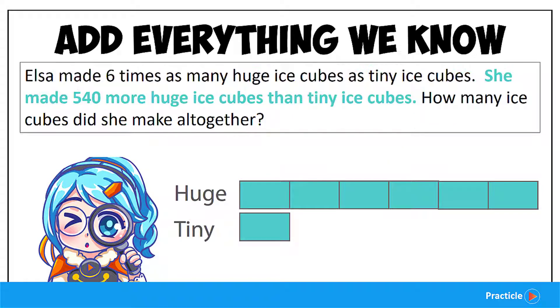She made 540 more huge ice cubes than tiny ice cubes. So it looks like we will need to add in this piece of information as well. Once again, let's try to spot the keywords. This should be quite easy, correct?